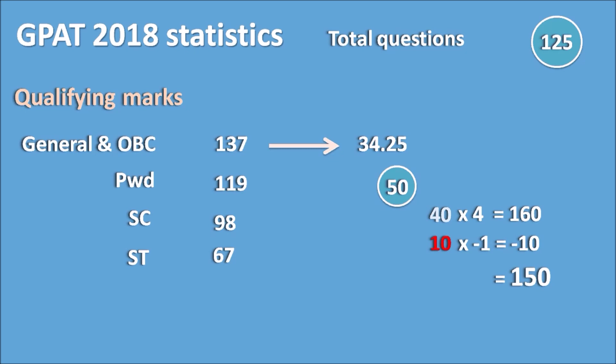Plan your preparation to attempt the minimum questions required for the qualifying mark and try to control negative marking. Negative marking is the main reason for getting a low score in GPAT. If you control negative marks to less than 10, or better less than 5, you will get a good score and good rank.